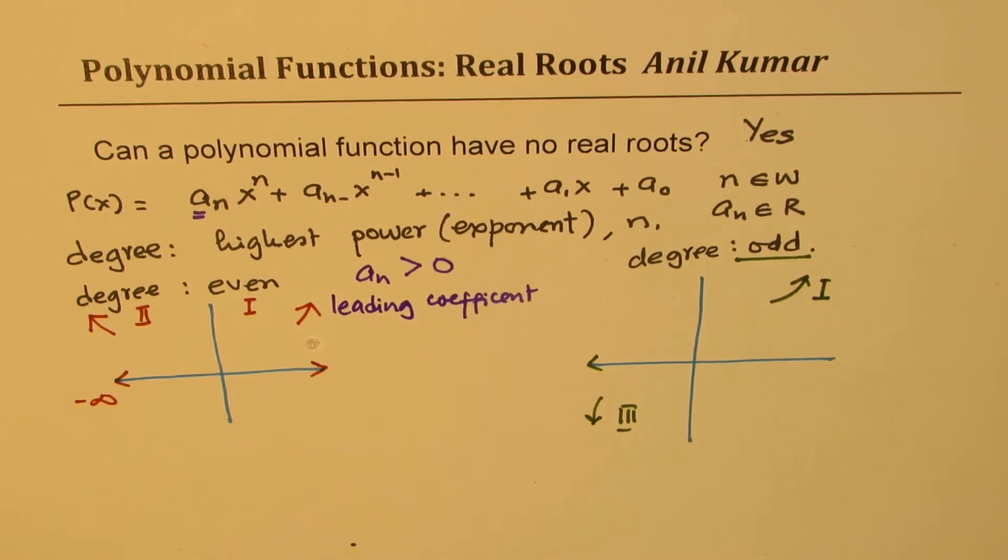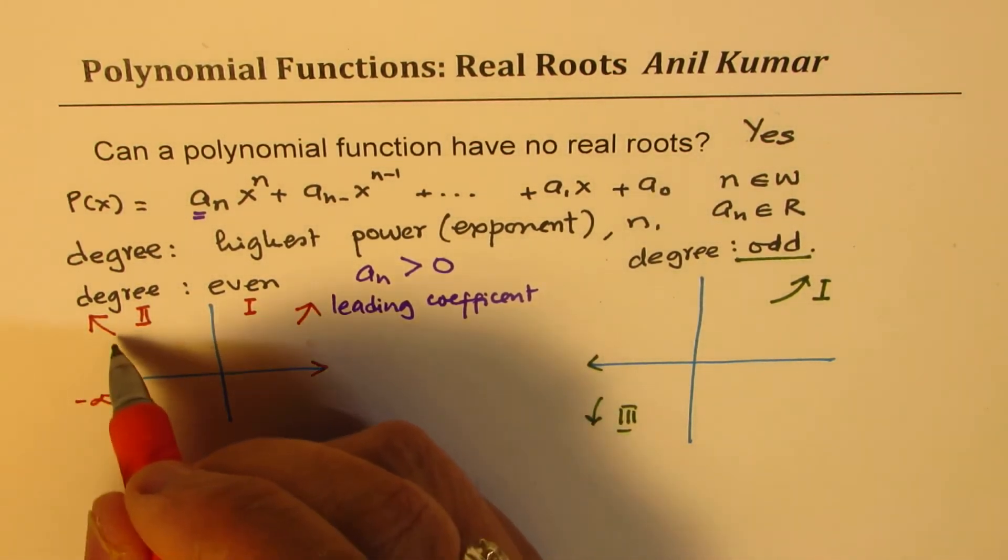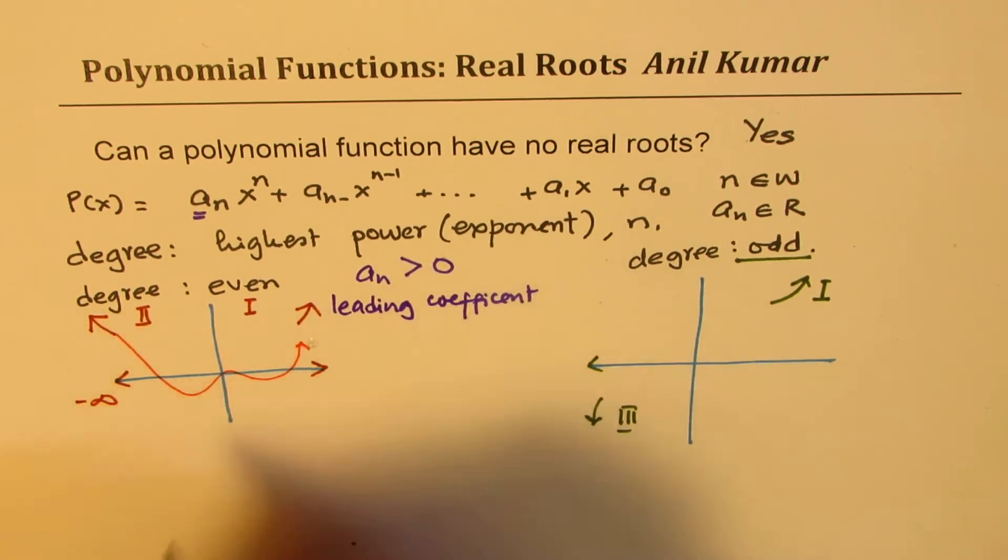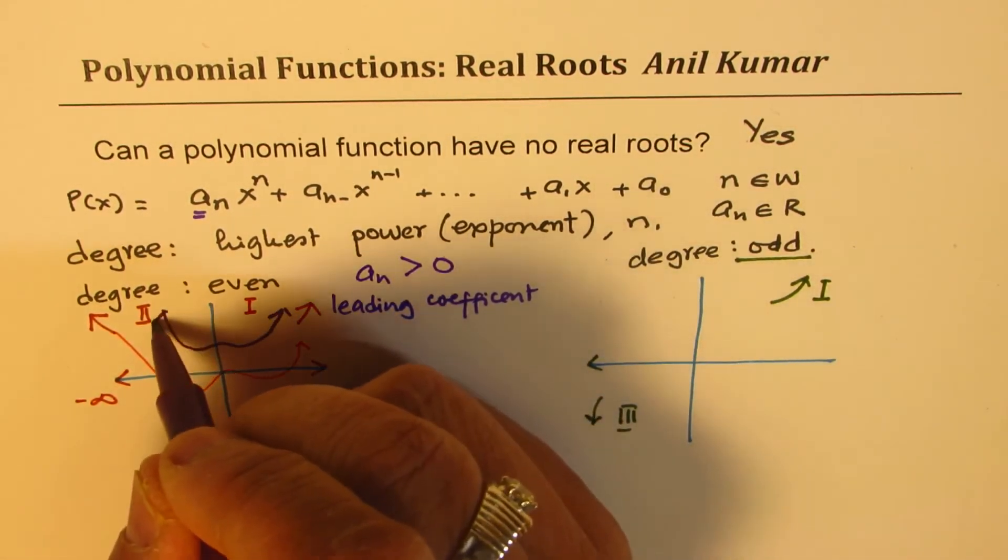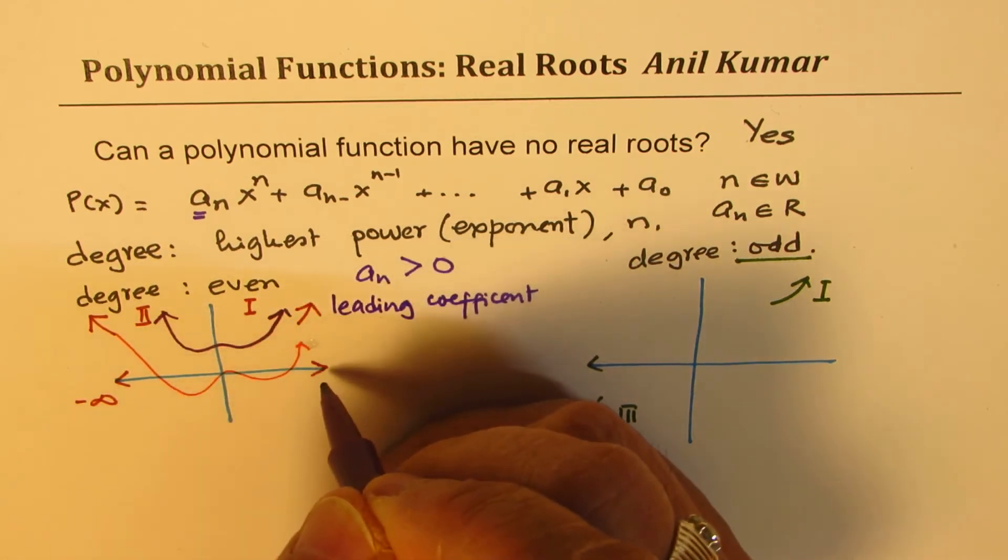Now from this, you can clearly see that in moving from quadrant two to one, the graph could go kind of like this. In that case, these are your real x-intercepts. But then, there is a possibility of the graph going straight without crossing the x-intercept.